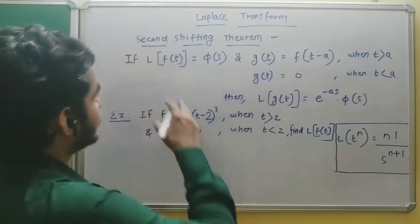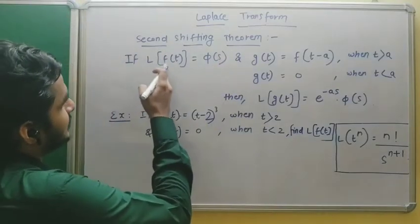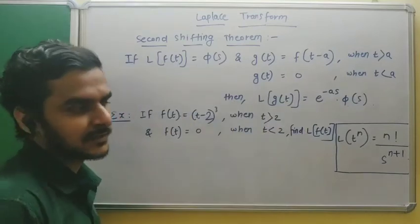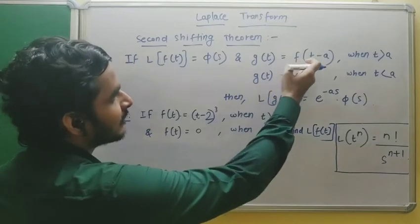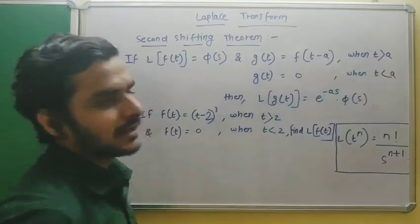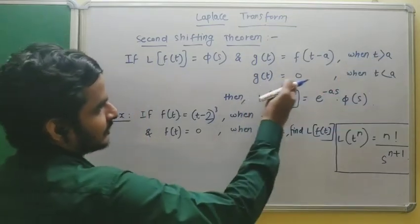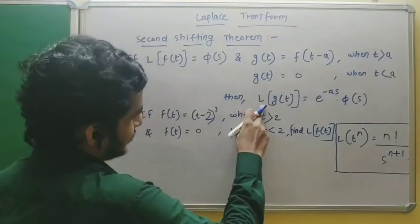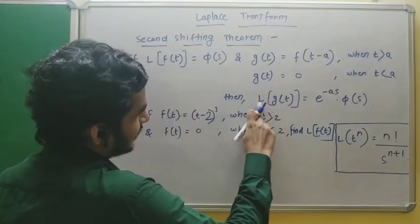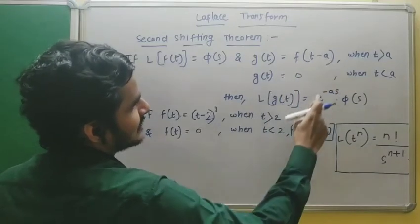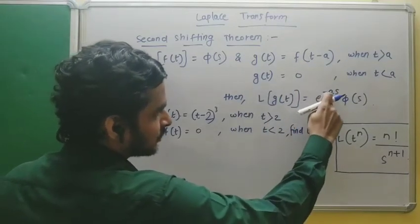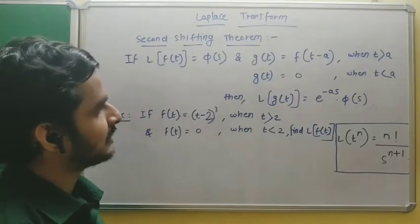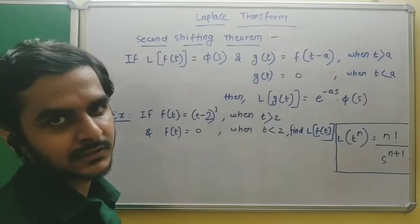The statement of the second shifting theorem is: if the Laplace transform of f(t) is φ(s), and there is another function g(t) defined as f(t-a) when t > a, and 0 when t < a, then the Laplace transform of g(t) is e^(-as)·φ(s). Let's take an example to understand how to apply this theorem.